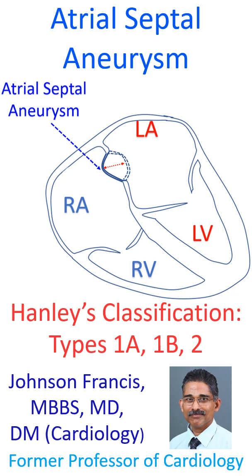By Hanley's criteria, atrial septal aneurysms can occur in up to 2% of the population. Hanley et al. have classified atrial septal aneurysms into 3 types: Type 1a, 1b, and 2.